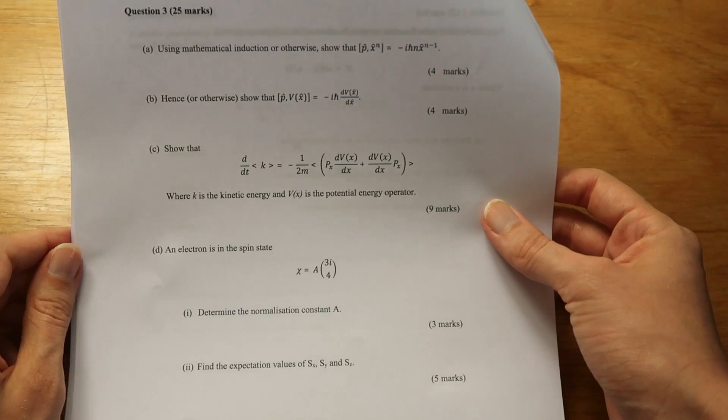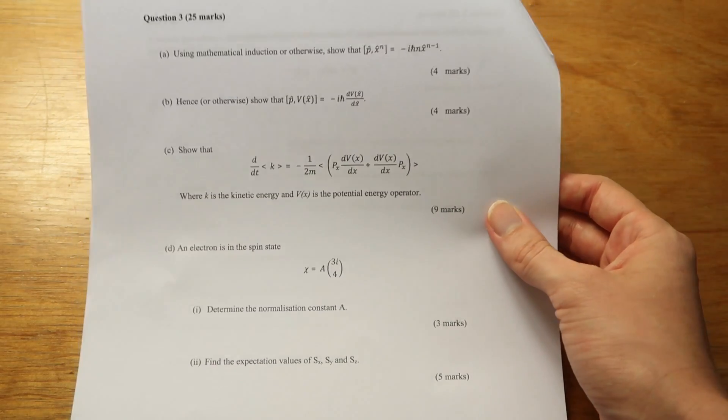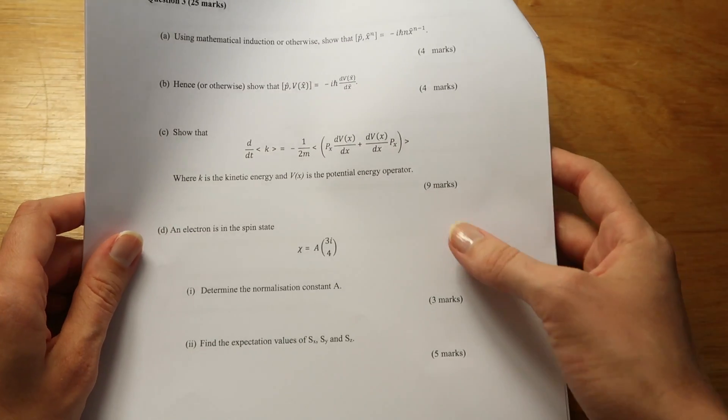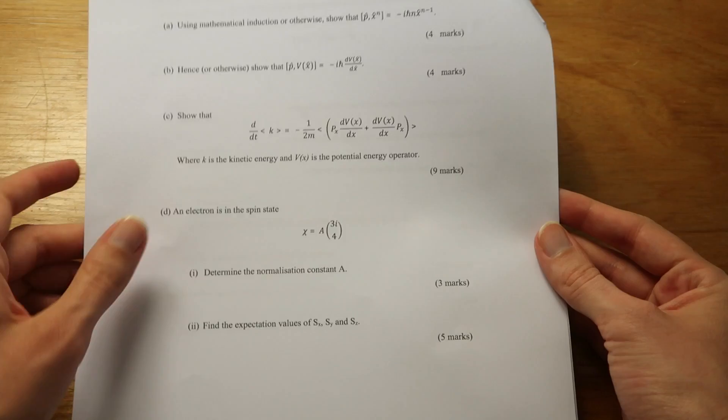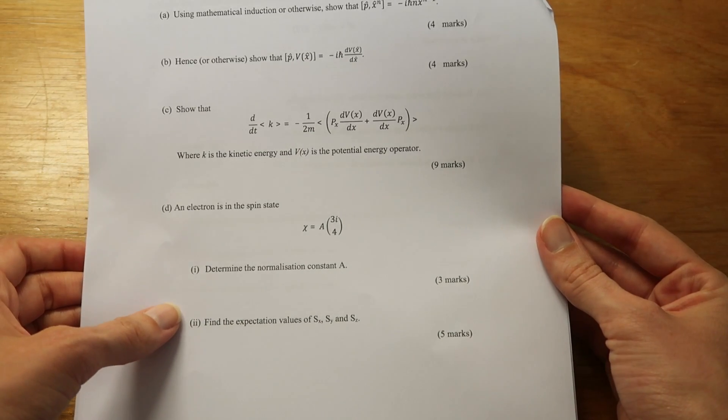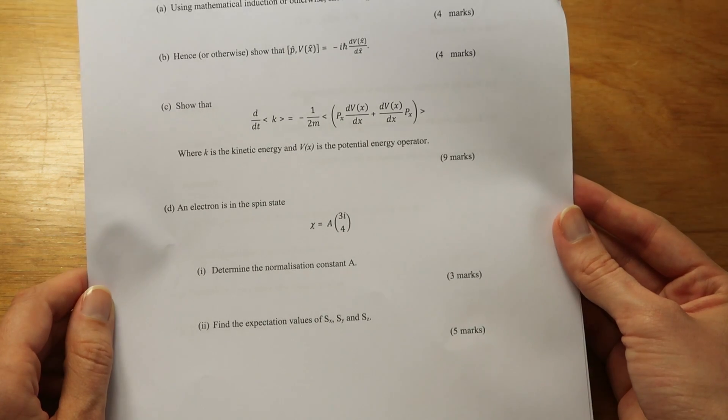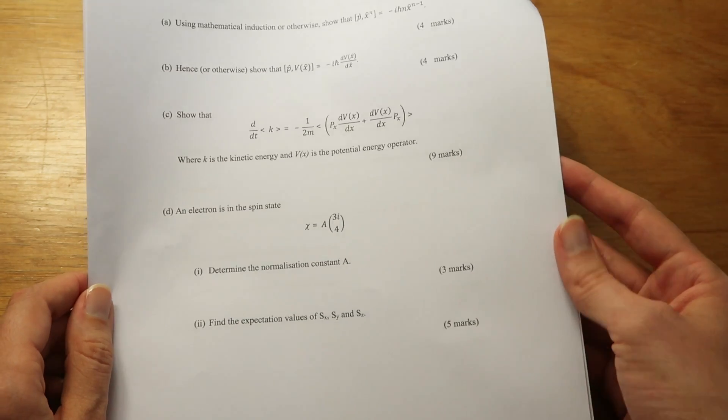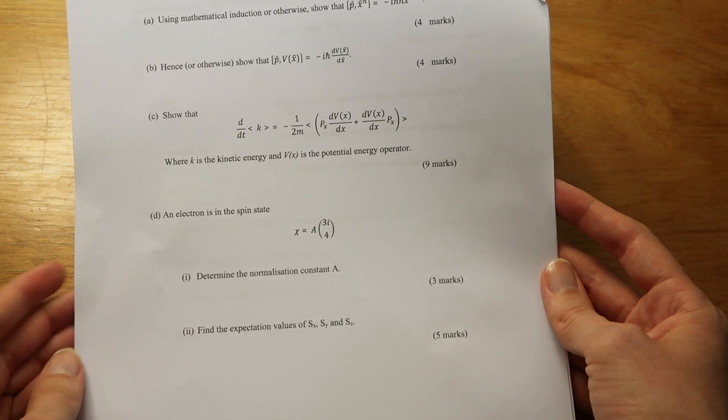Part C I would probably find pretty tricky in this exam, and it's showing a relation that's got something to do with Ehrenfest's theorem. I don't know how to pronounce that. I barely remember that theorem, but I know this has got something to do with it. And then part D we're finishing off with a question about spin. The spin question really comes down to using linear algebra and it's a useful application of some of the maths you learn quite early on. So finding a normalization constant and expectation values.